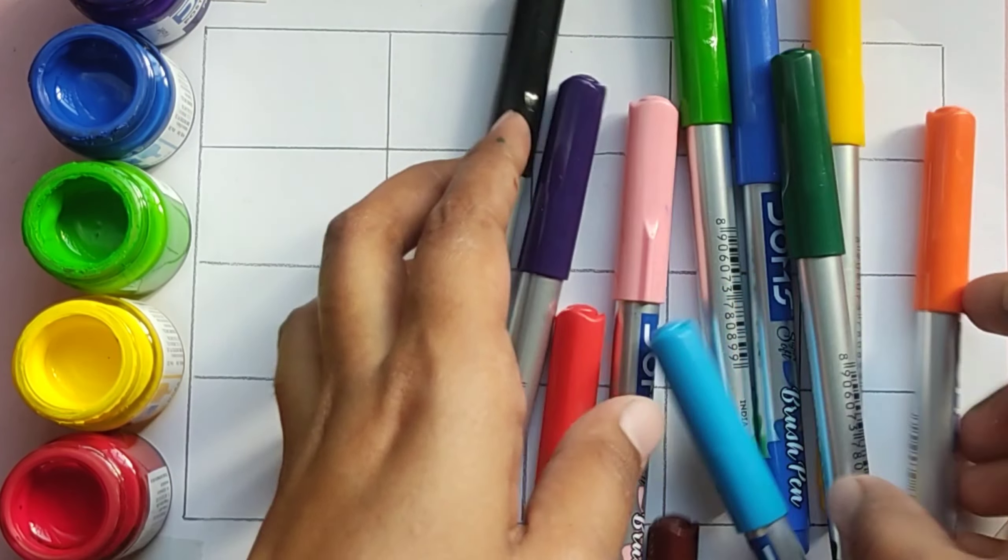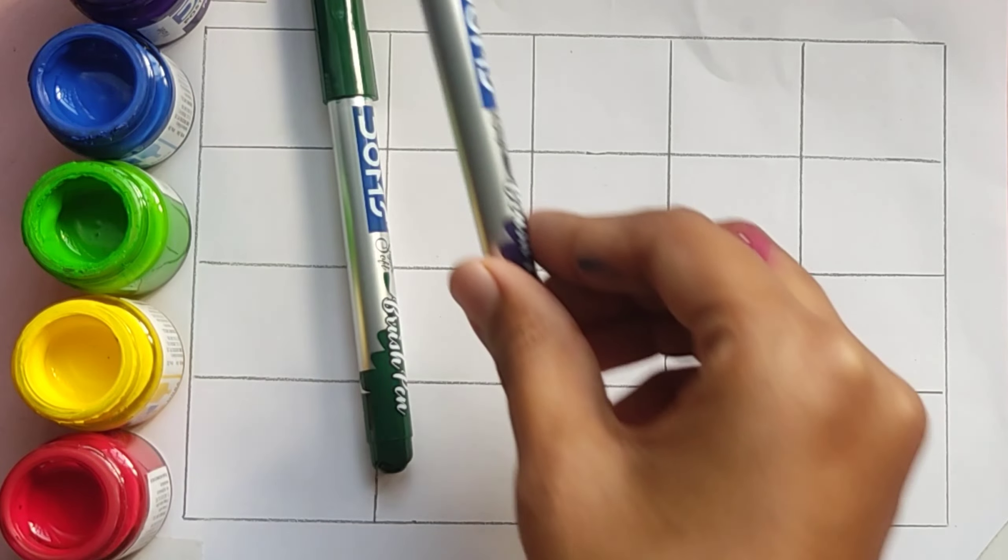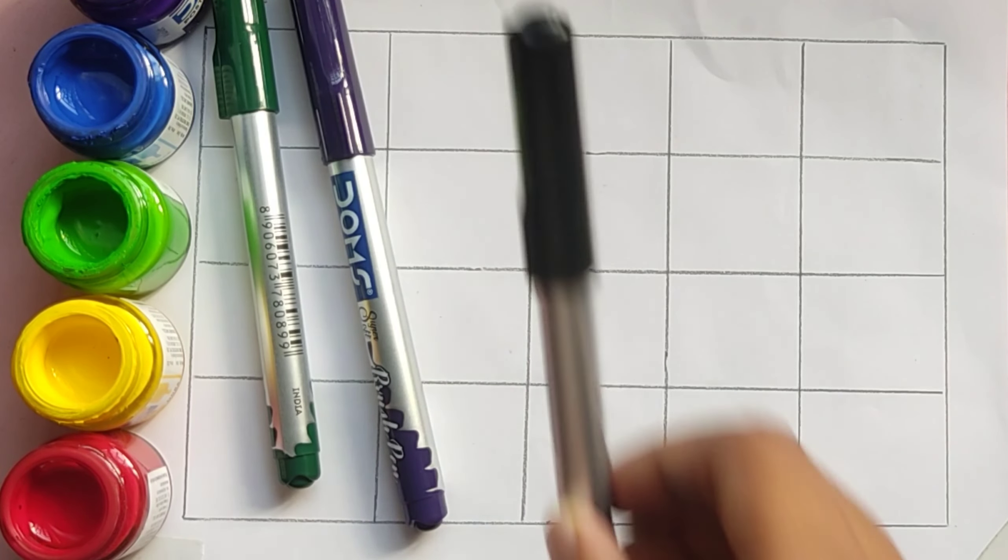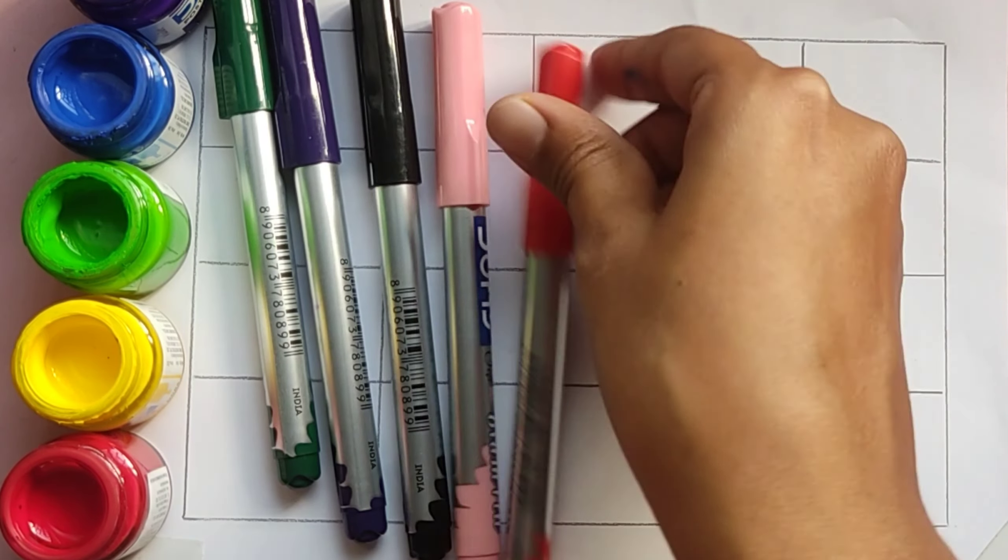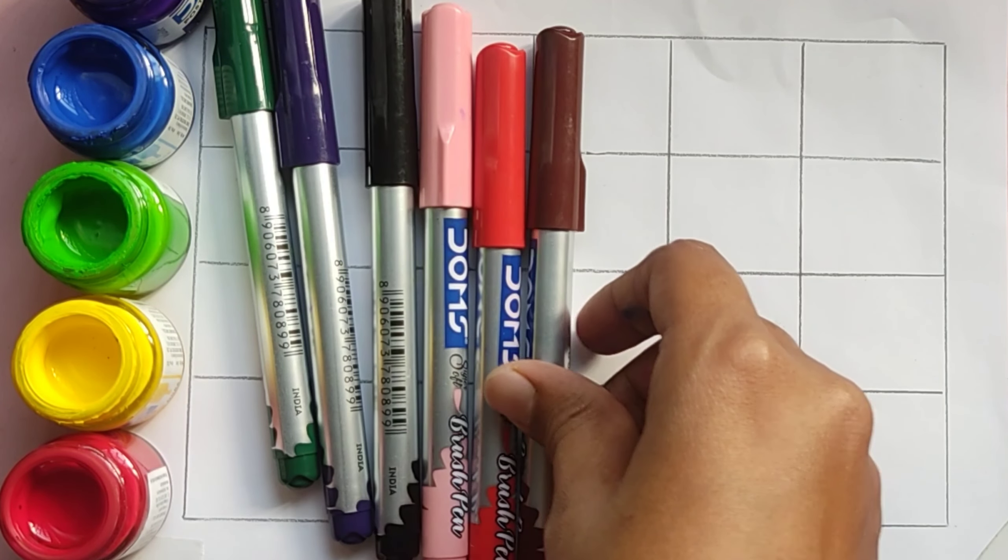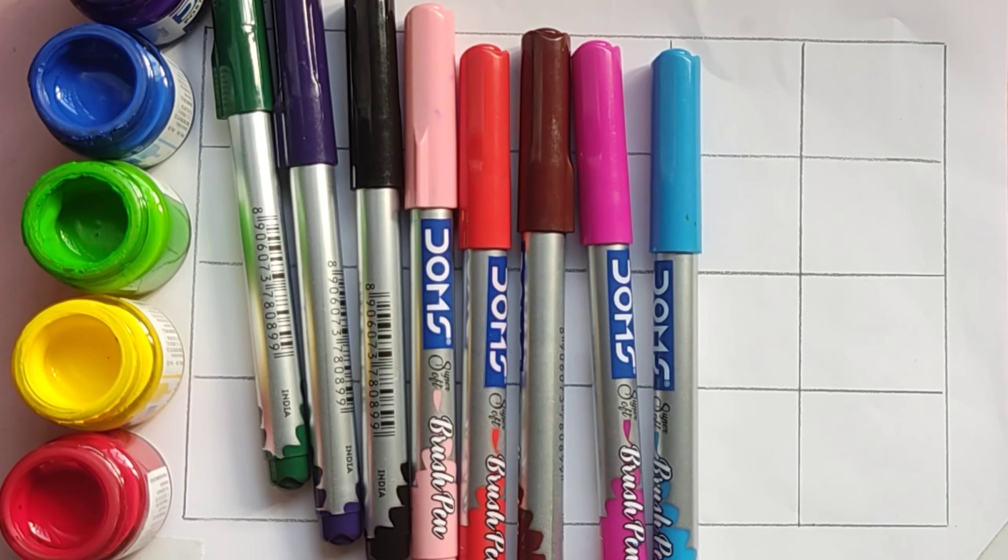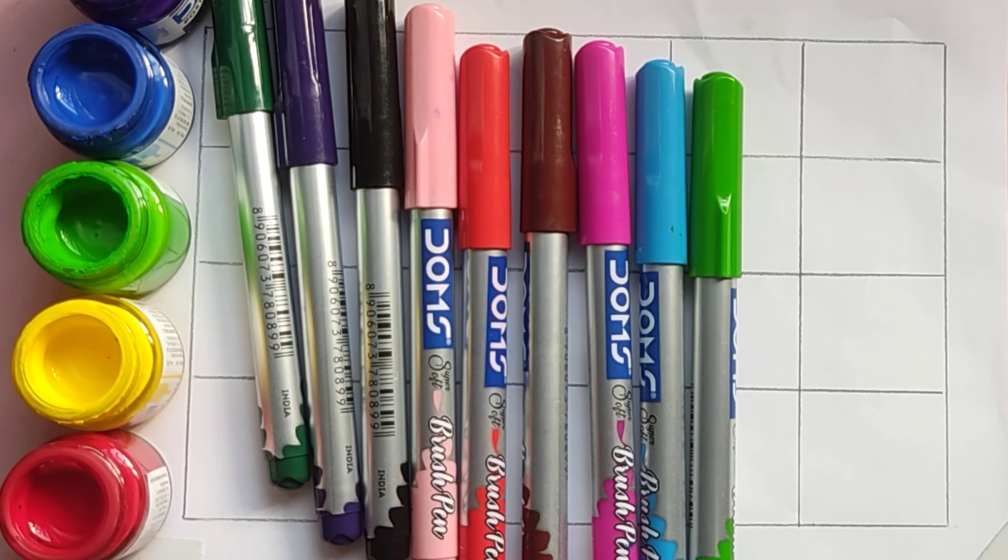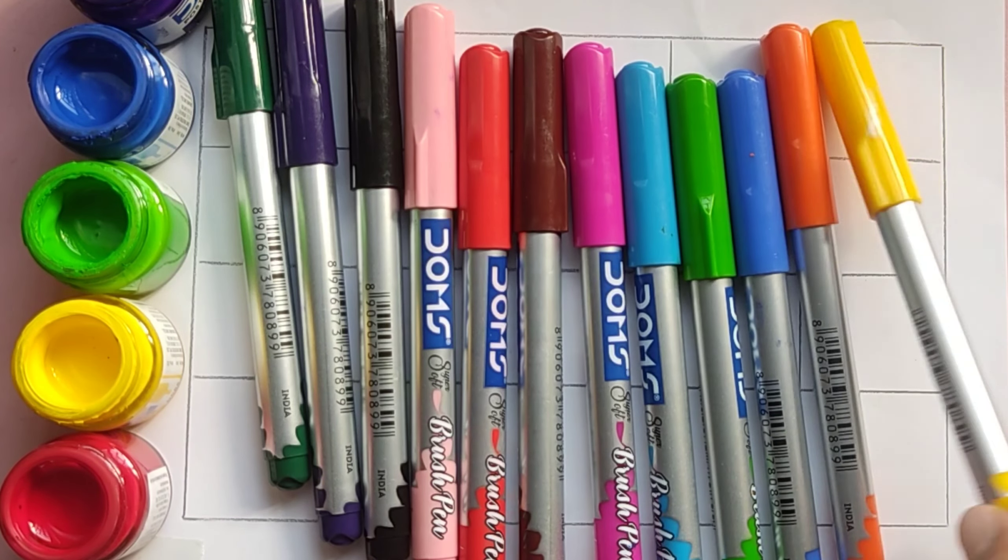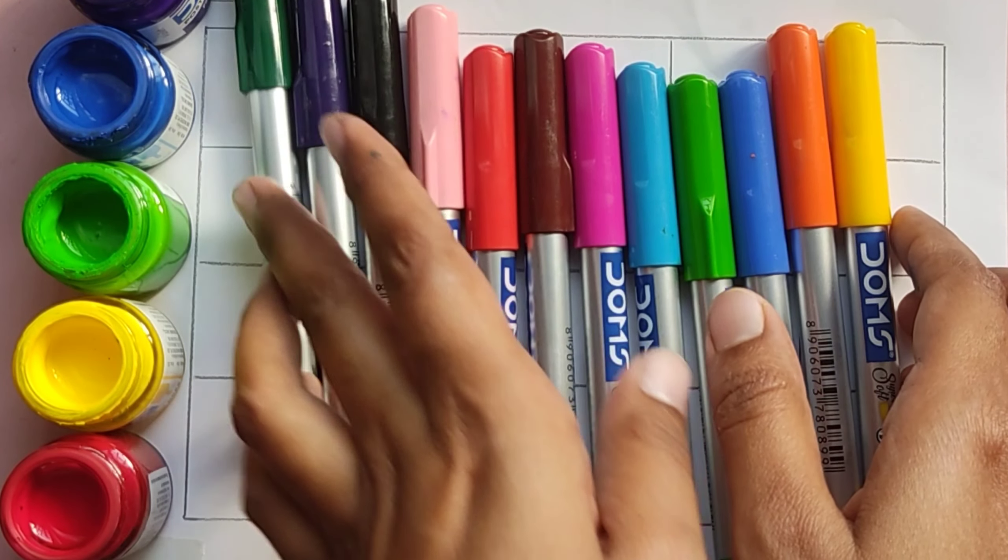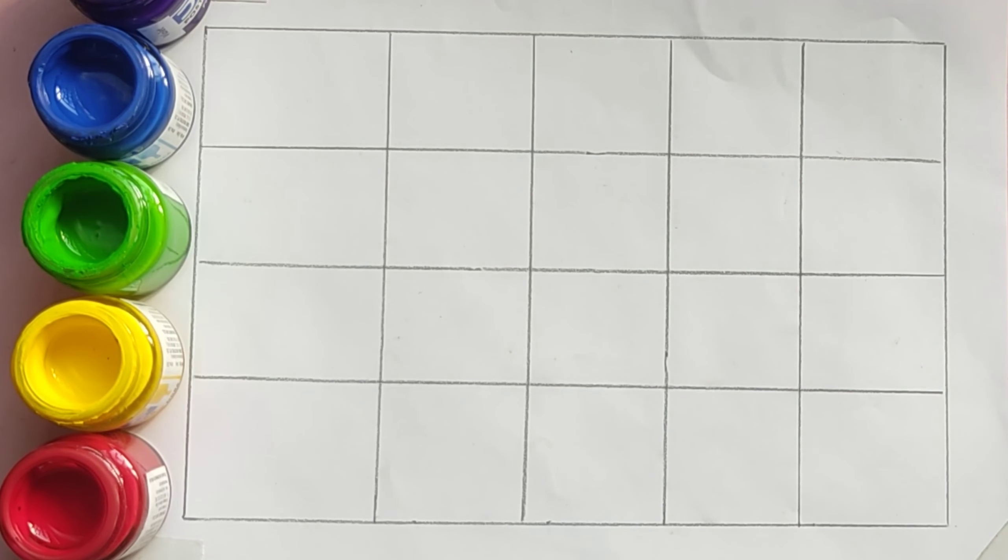Hello kids, this is colors: green, purple, black, baby pink, red, brown, pink, sky blue, light green, dark blue, orange, and yellow. Today we will learn counting.